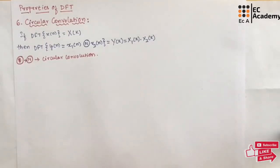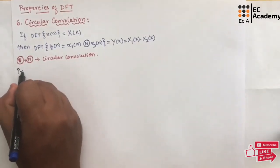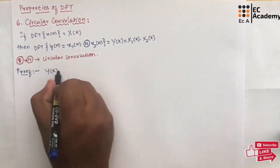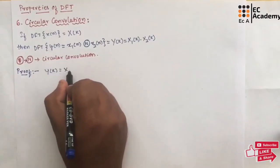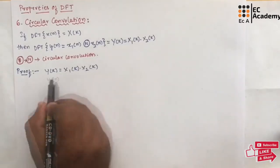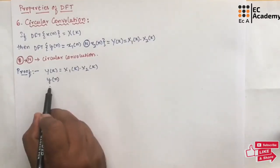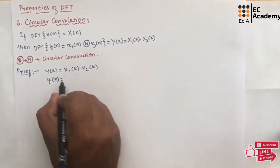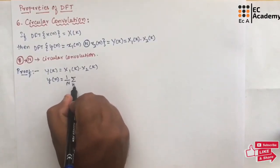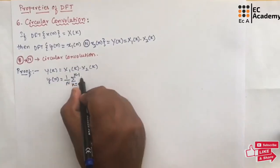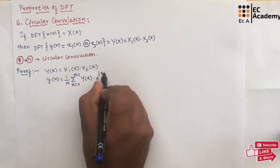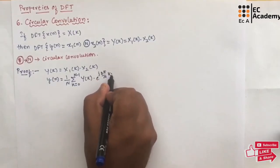Let us take the proof. Let us take Y(K), which will be written as X1(K) into X2(K). The IDFT of Y(K) gives Y(N), which can be written as 1/N summation from K=0 to N-1 of Y(K) into E to the power of J(2π/N)KN.